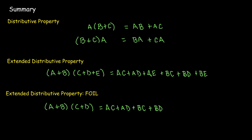In summary: the basic distributive property lets us multiply a group on the left or on the right and distribute the multiplication across each term inside the group. For the extended distributive property, we have the product of two groups and take each term in the left group multiplied times each term on the right. For the special case of a binomial times a binomial, we use FOIL to remember that we'll have 4 products.